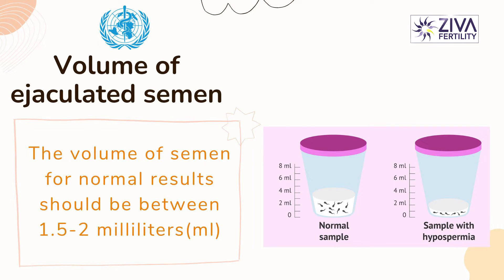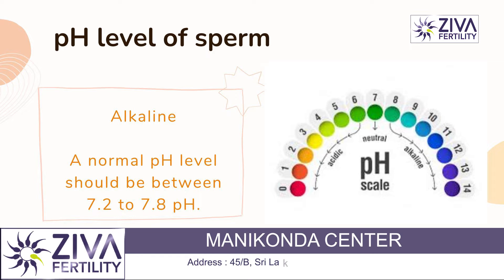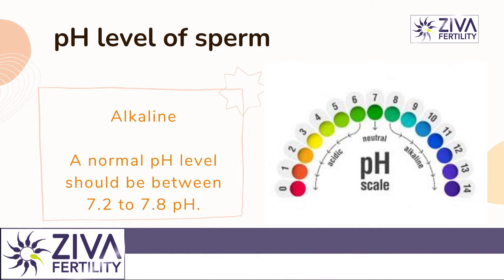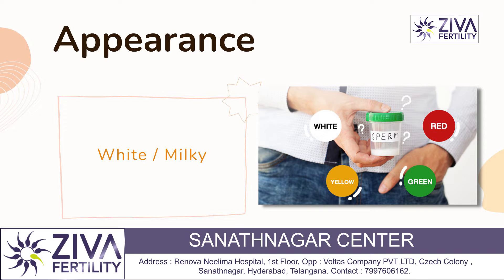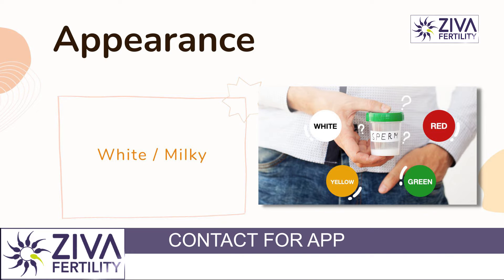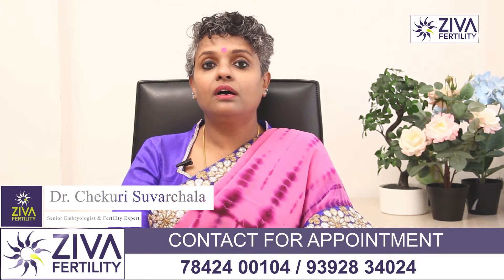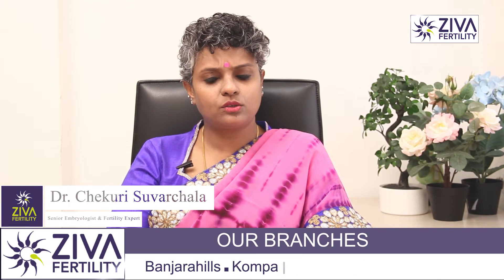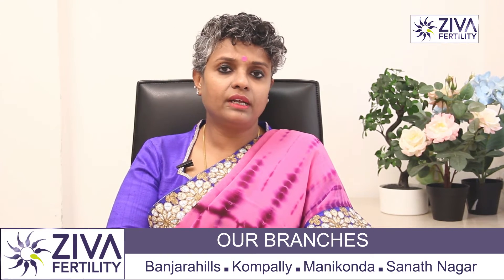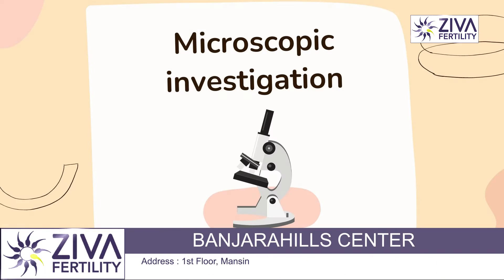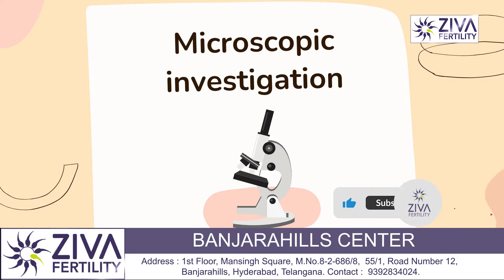The volume of a normal semen sample can be anywhere from 1.5 to 2 ml, as prescribed by the World Health Organization. The pH should be alkaline — that is 7.2 to 7.6 — it should not be acidic or basic. The appearance should be white and milky. If it is reddish or pinkish, we assume there are blood cells, which is investigated by microscopic analysis.